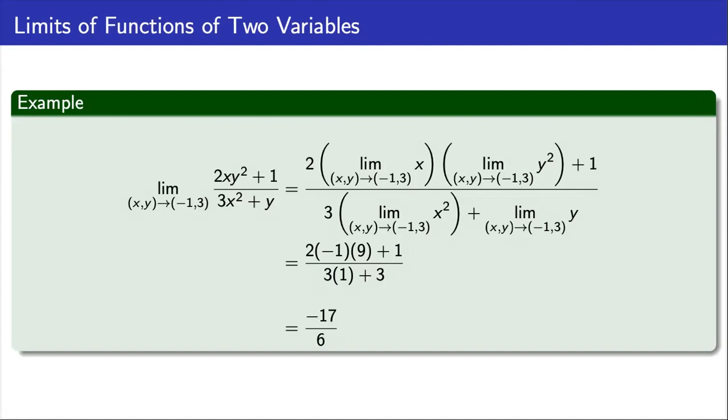For example, consider the following two variable limit. Using properties two through five from the previous slide, we can break up this limit into these different limits. Then, using what we know about single variable limits and property one from the previous slide, we can evaluate each of these limits. And after a bit of algebra, we arrive at a final value of negative 17 over 6.